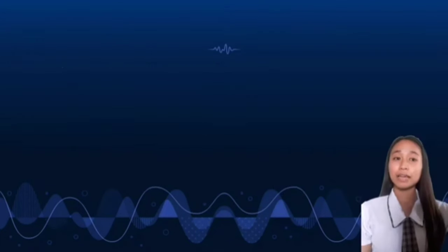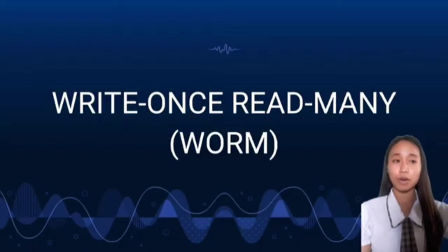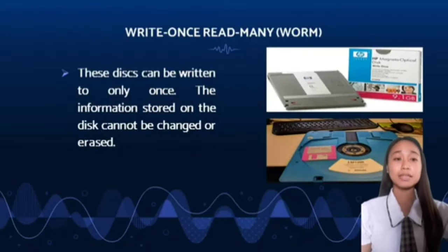The second type of optical disk is the write-once, read-many, or WORM. This disk can be written to only once. The information stored on the disk cannot be changed or erased. This device stores data in a non-rewritable format to prevent users from accidentally erasing or altering sensitive information. WORM is also known as write-once, run-anywhere, or WORA.